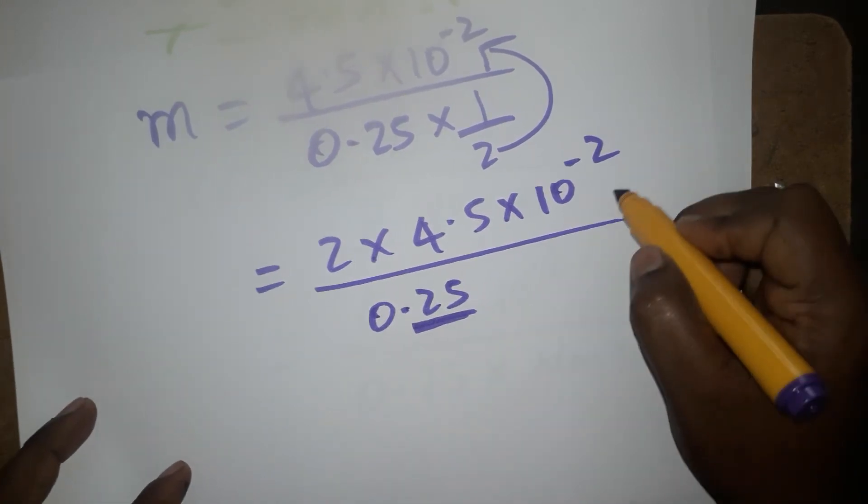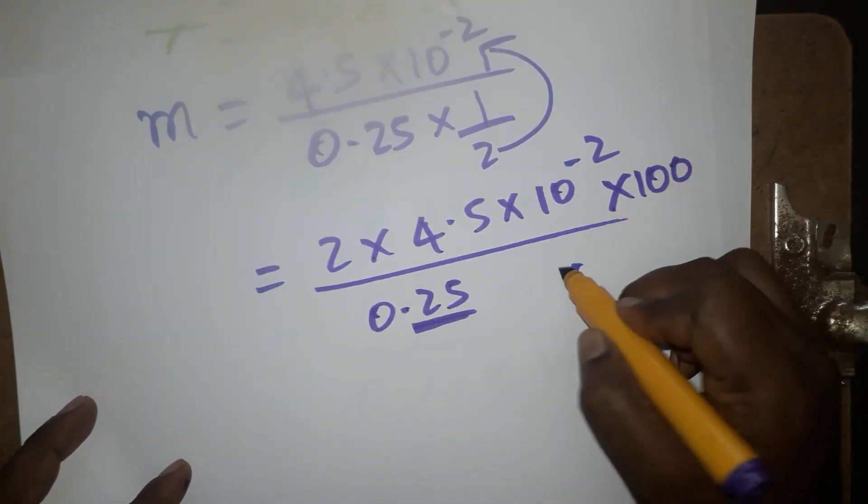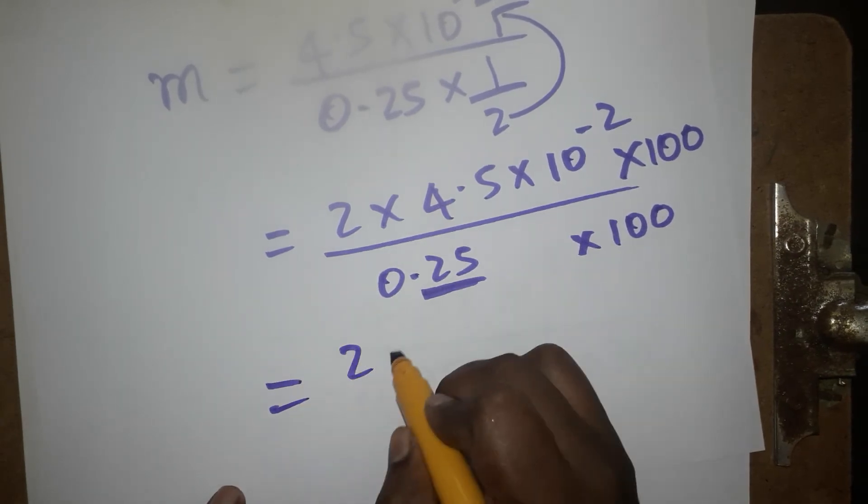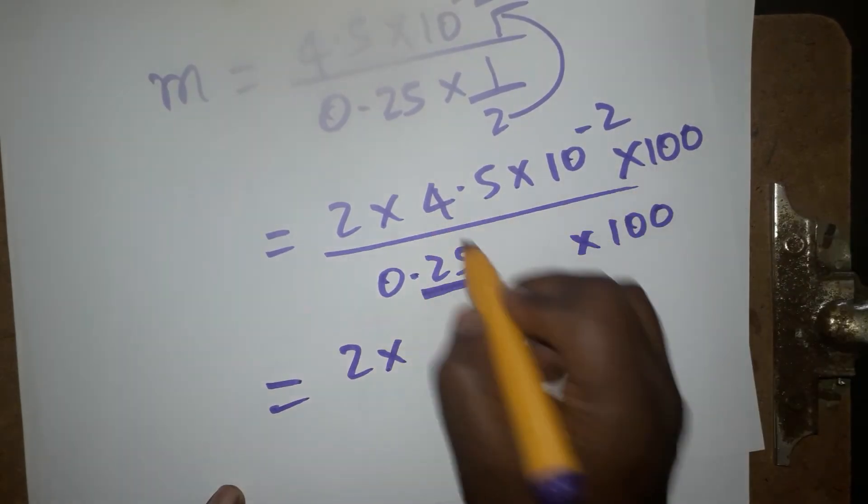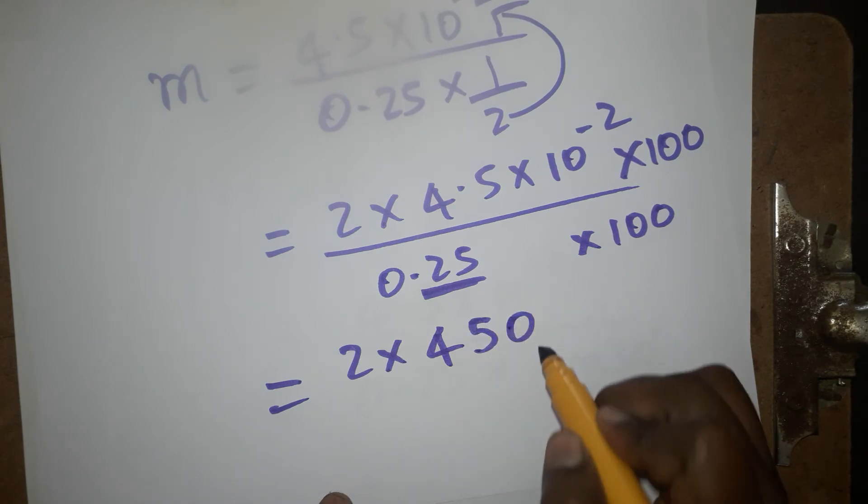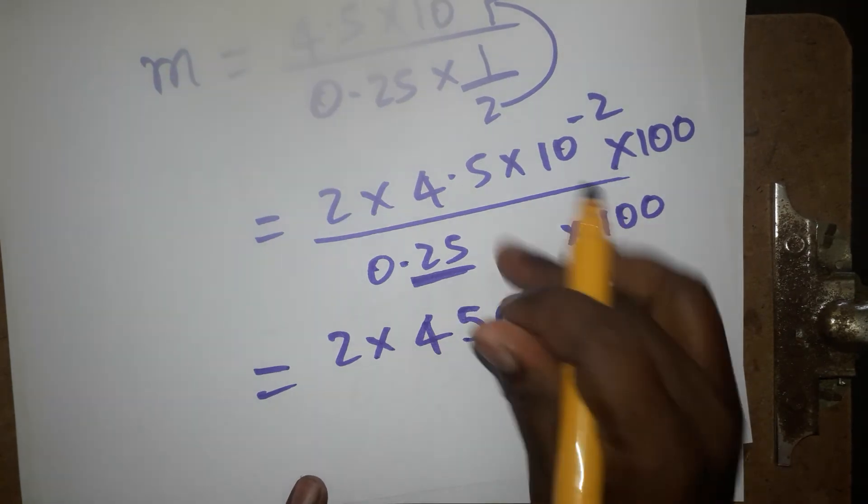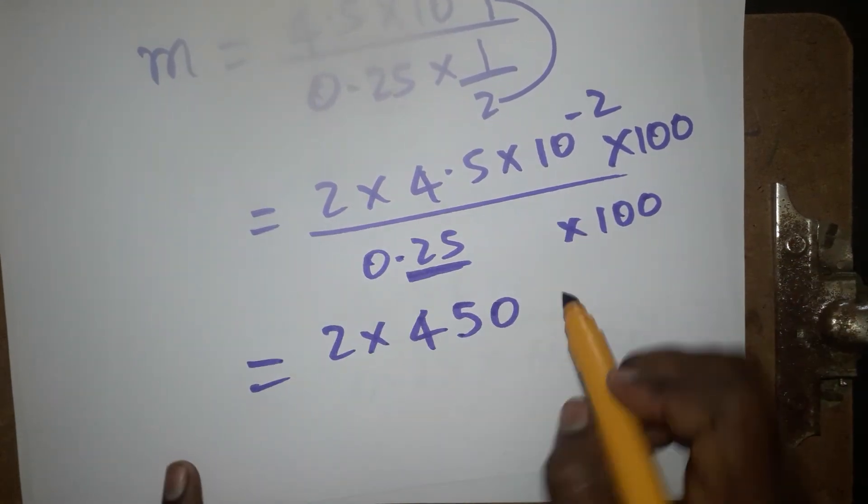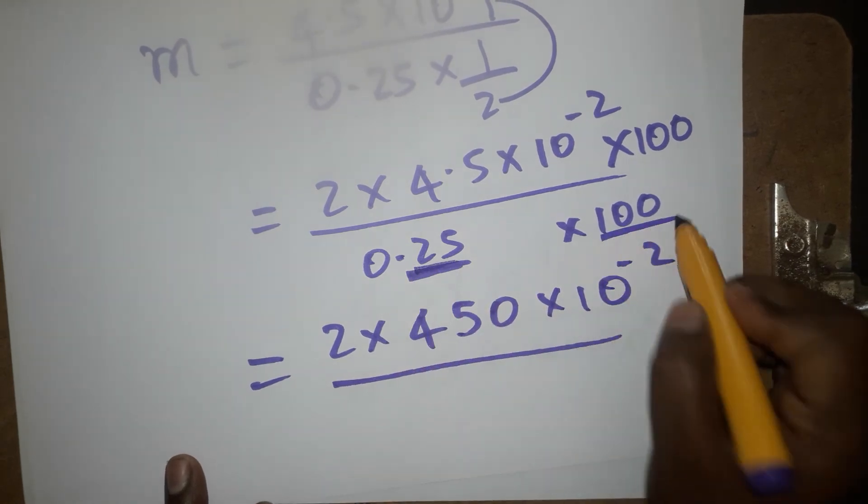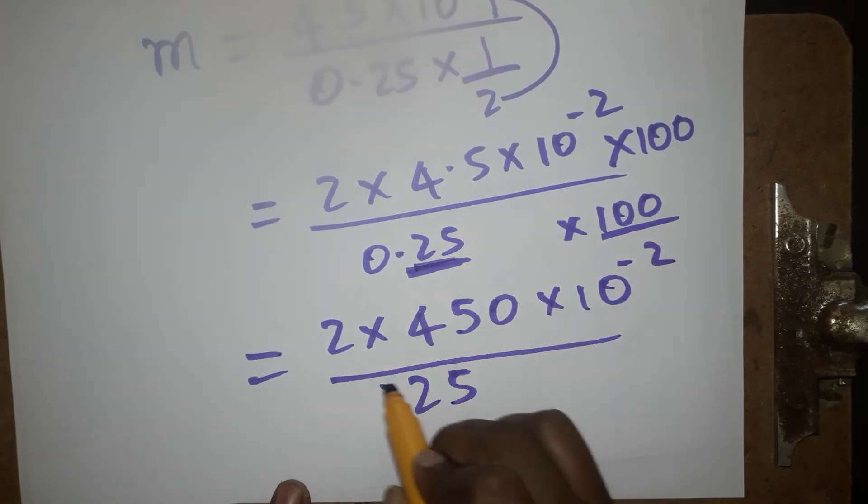I want to remove this decimal. Just multiply numerator by 100 and denominator by 100, the decimal will go off. Now 2×100 gives us 450 because of this decimal placement into 10⁻² divided by 25.